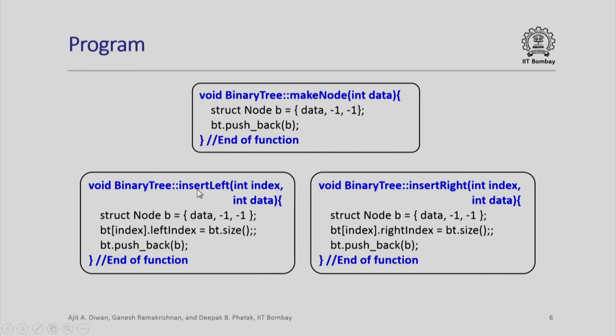Here is an insert left function, struct node b which will have data and minus 1, minus 1 as the initial values. Now we say left index of the bt index is to be assigned the value bt dot size. What is the bt dot size? It depends upon how many nodes are there in the tree.